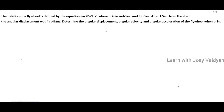Question. The rotation of a flywheel is defined by the equation omega equals 3t squared minus 2t plus 2, where omega is in radians per second and t is in seconds. After 1 second from the start, the angular displacement was 4 radians. Find the angular displacement, angular velocity, and angular acceleration of the flywheel when t equals 3 seconds.